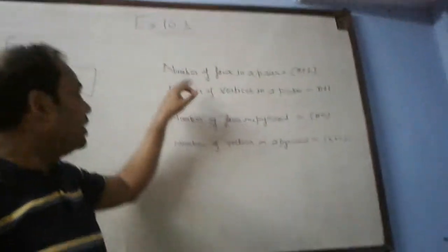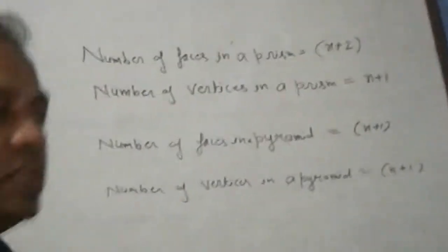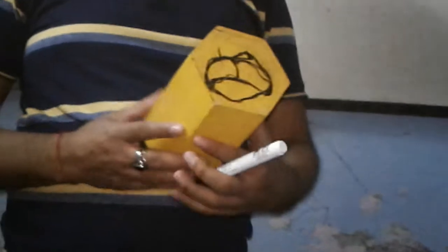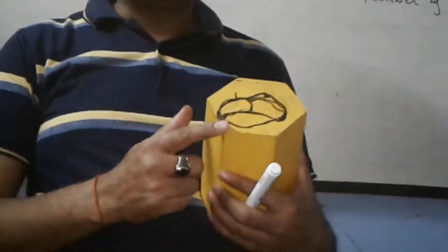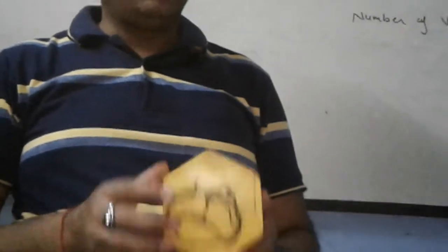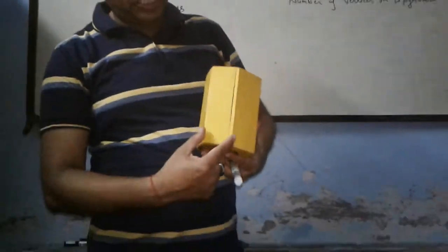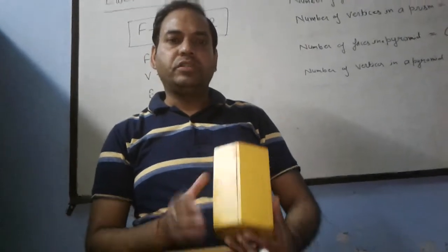Now, the number of faces in a prism. We will discuss this. What is the prism? The base is hexagon, which has number of sides equal to 6. So how much is it? n plus 2. 6 sides, plus 1 top and 1 base, so 6 plus 1 top and 1 base, so n plus 2.